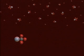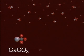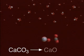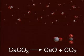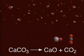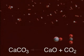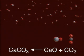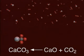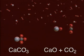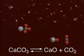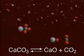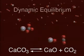When heated in a closed system, calcium carbonate will decompose to form calcium oxide and carbon dioxide. As the amounts of calcium oxide and carbon dioxide increase, a reverse reaction occurs and calcium carbonate is resynthesized. When the decomposition rate of calcium carbonate equals the synthesizing rate of calcium oxide and carbon dioxide, the system is said to be at dynamic equilibrium.